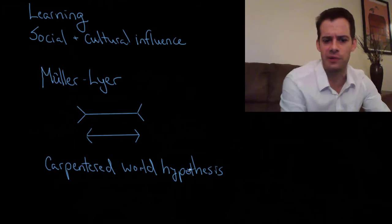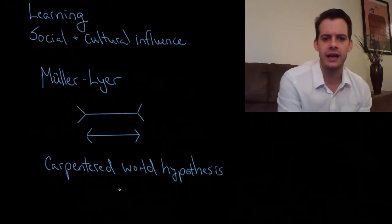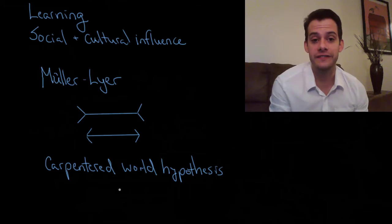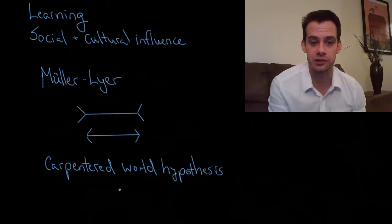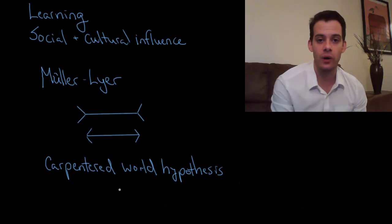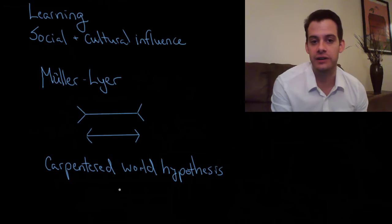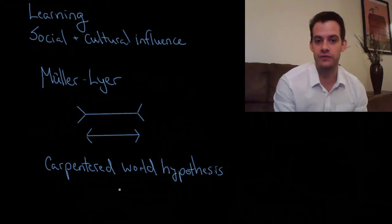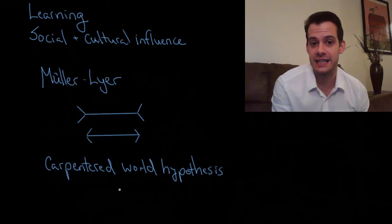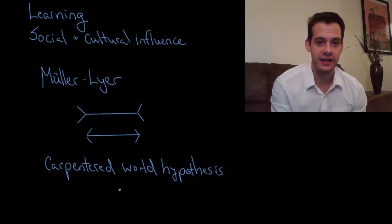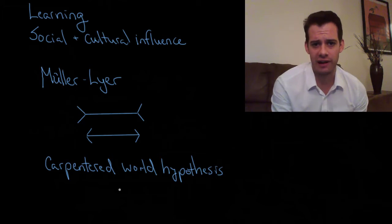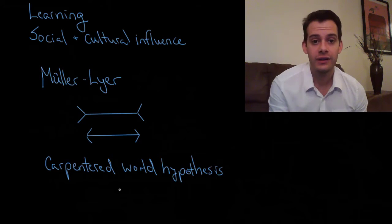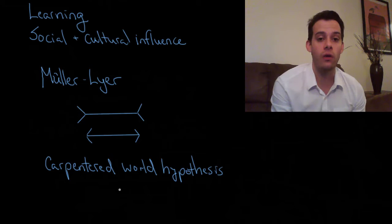The Carpentered World Hypothesis is the idea that people who live in a more carpentered world are more susceptible to the Müller-Lyer illusion. So what do I mean by a carpentered world? This refers to a world that has a lot of artificial, created structures, things that are carpentered. So you're going to see lots of right angles, you're going to see parallel lines converging. If you think about most of the things you see, most of your experience in buildings is a very carpentered world. There's lots of right angles.